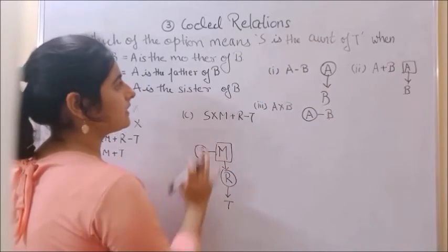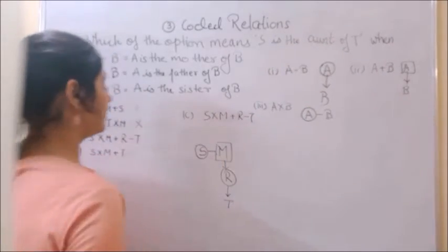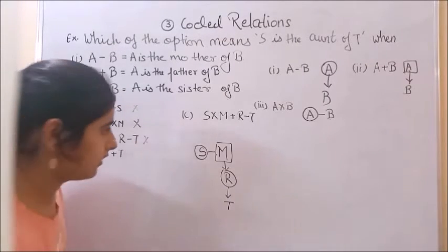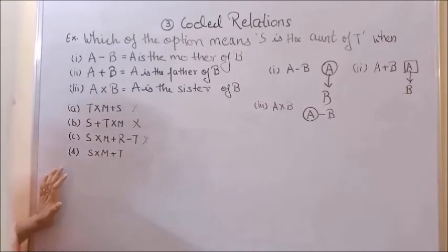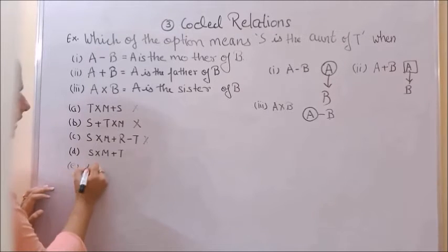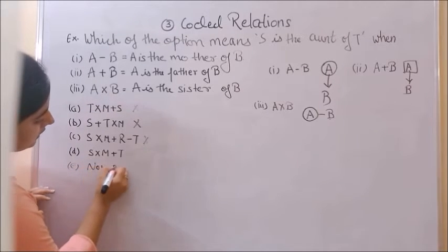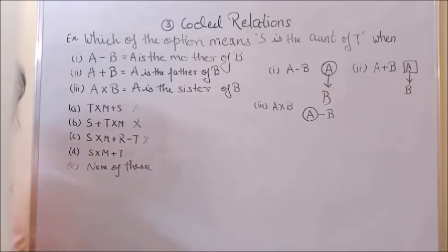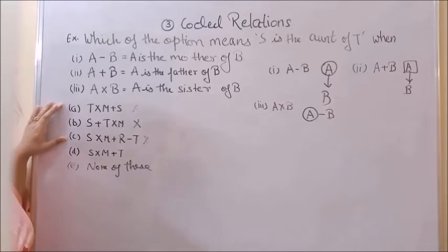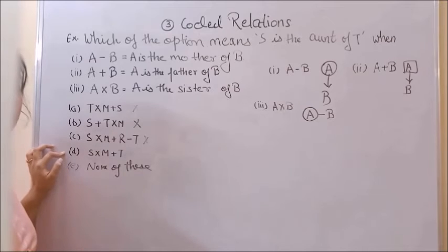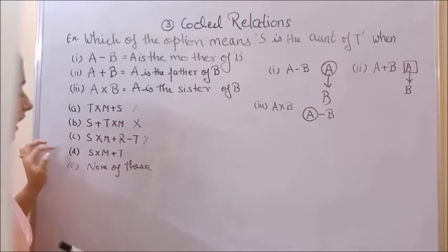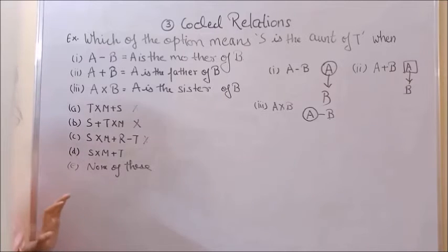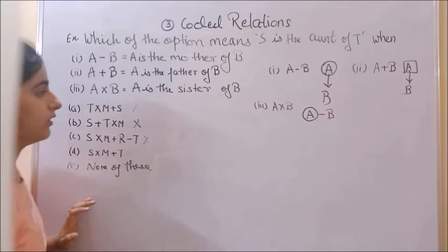So the C option doesn't satisfy this statement, that's why option C is wrong. Now the last option. In some exams there are five options - there is none of these. So it won't be that you have solved three options and ticked the fourth option by thinking that the answer is the same. It's also possible that the fourth is wrong and none is the answer. So be careful.